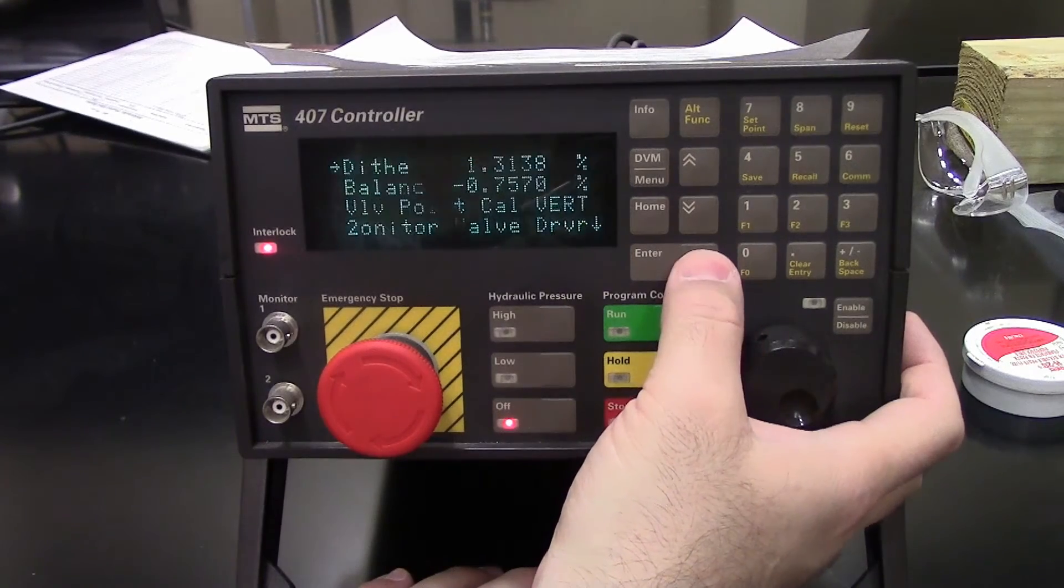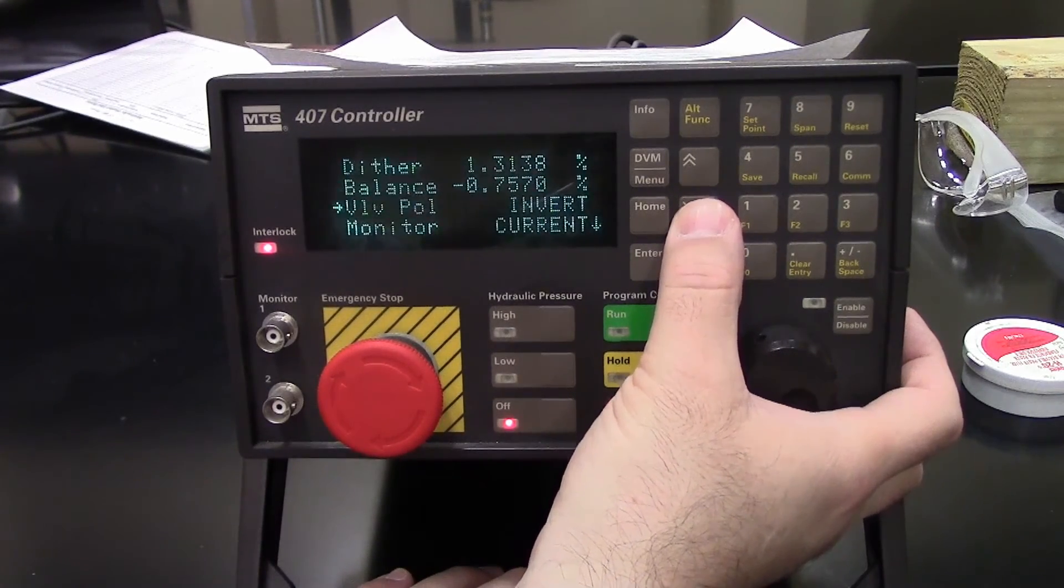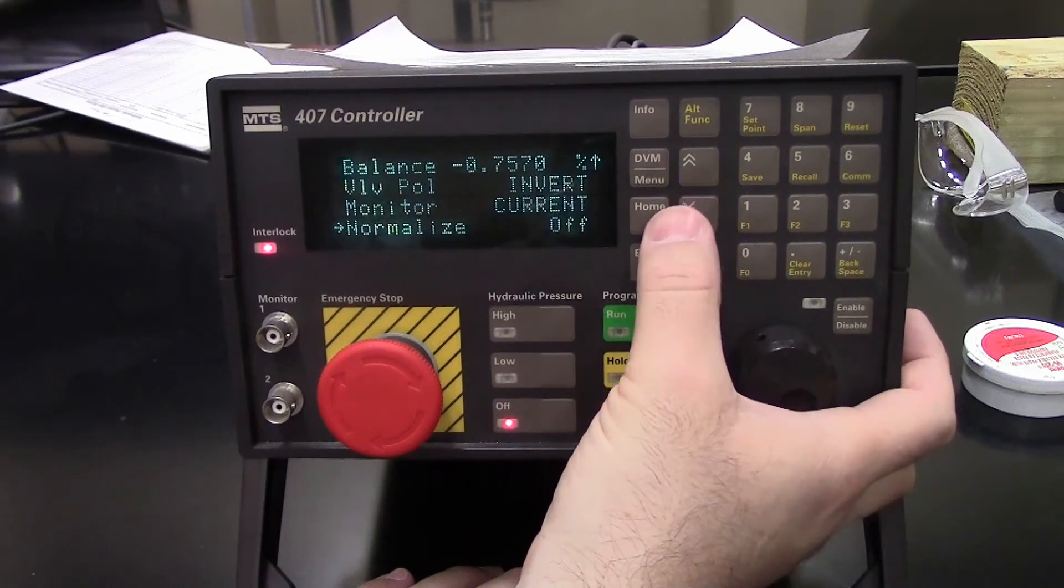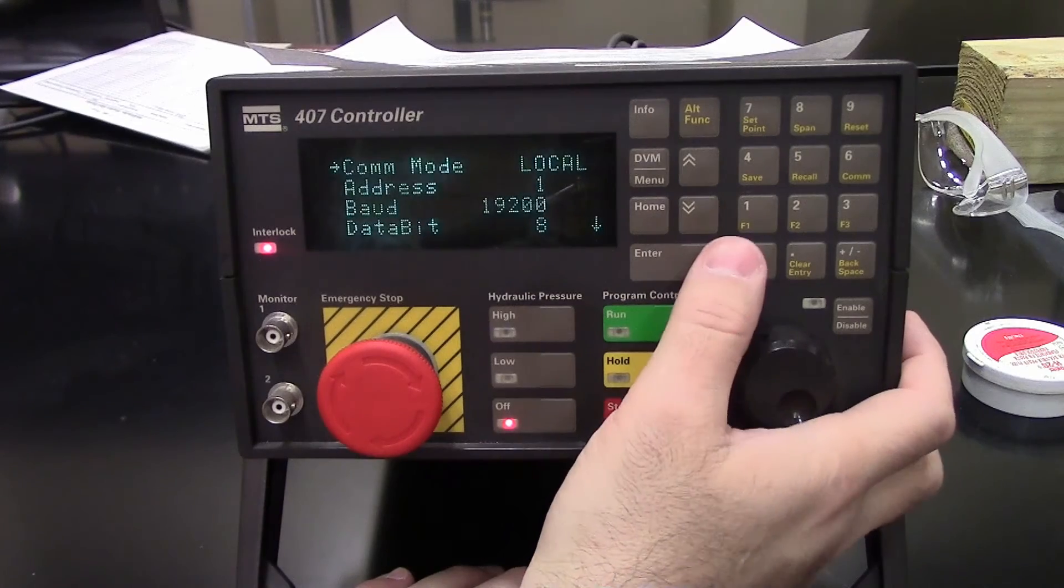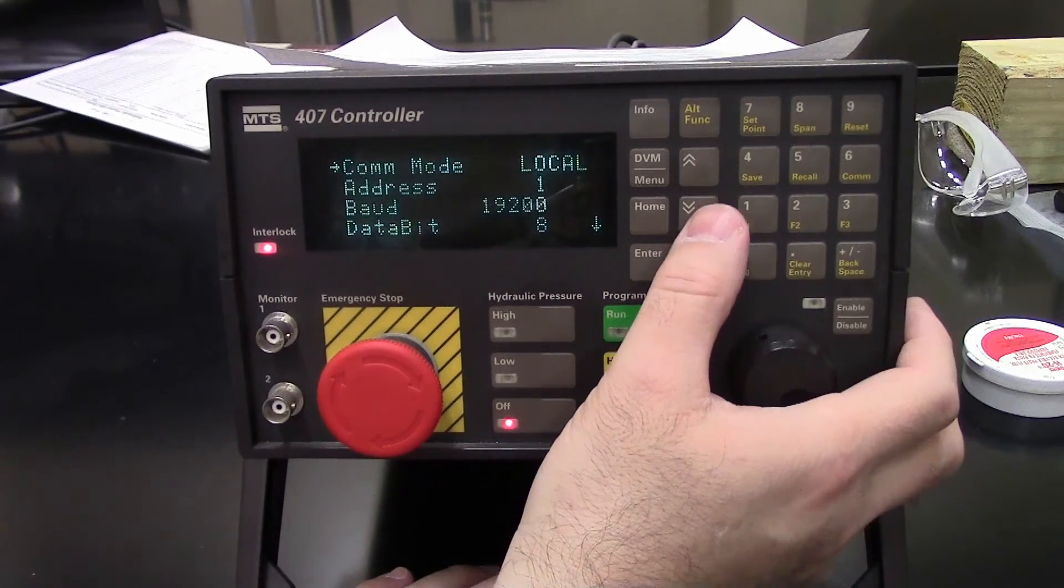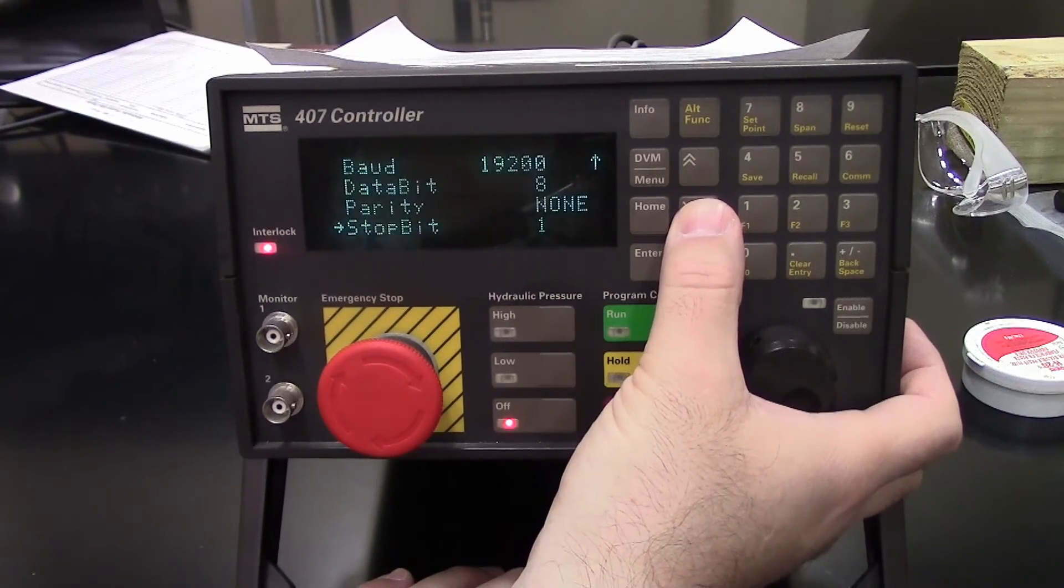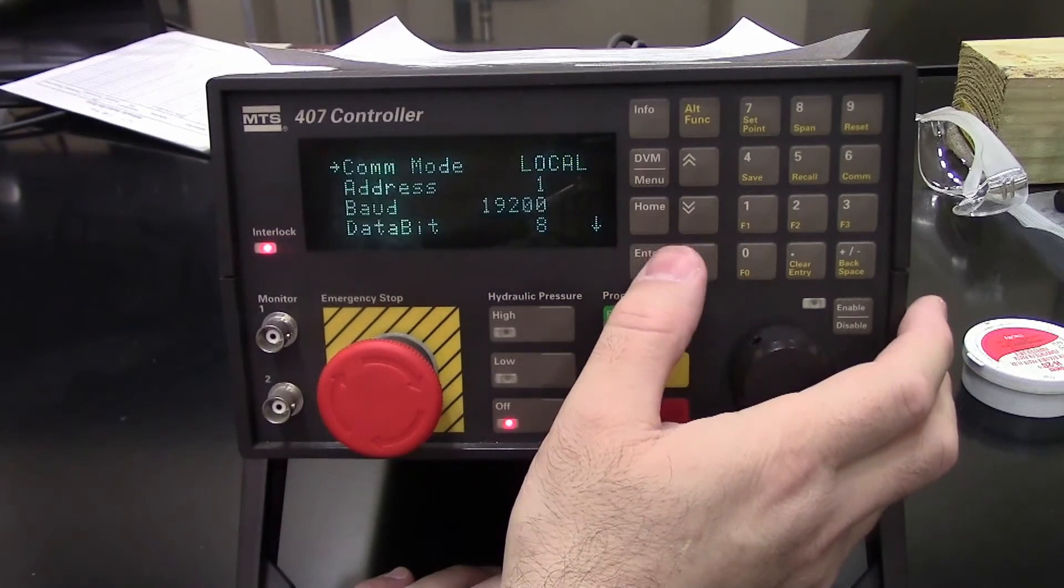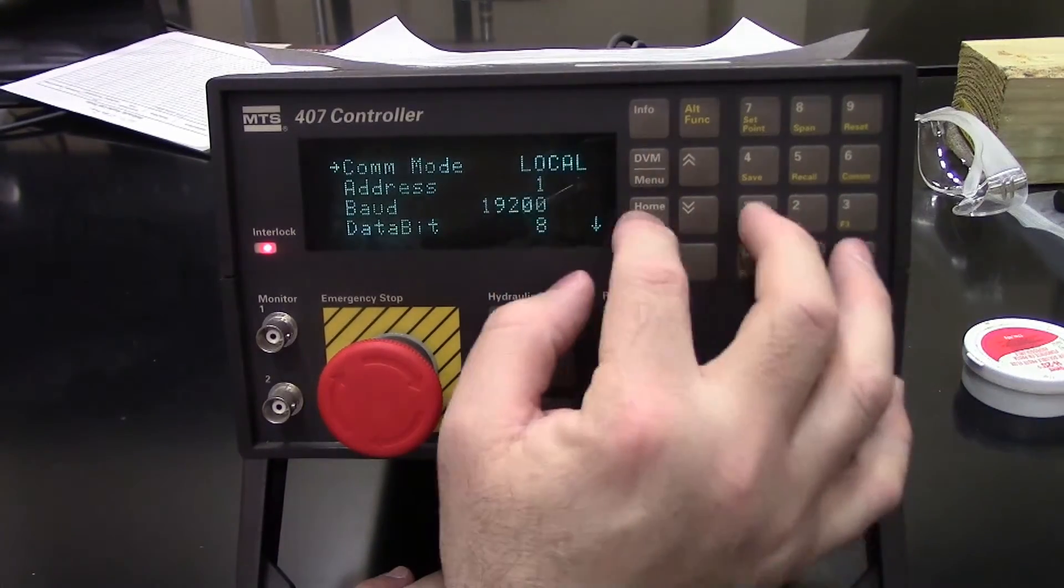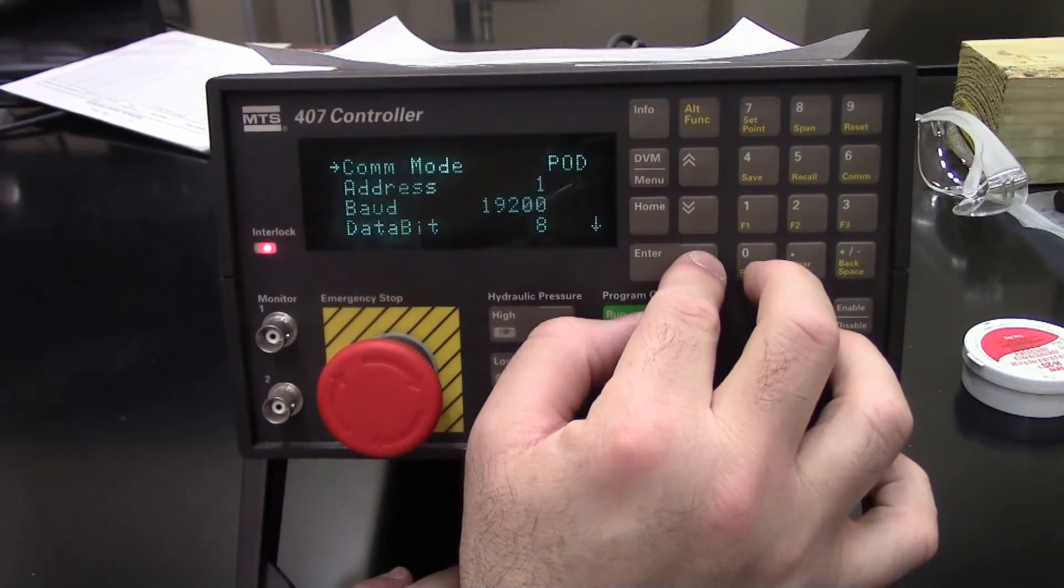Two stage valve driver. And dither, balance, valve, polarity, monitor. Communications - again, only if you have your communications card. It sets this up. In order to get it hooked up with a serial cable, you need to change this to remote instead of local. Pod is a handheld device.